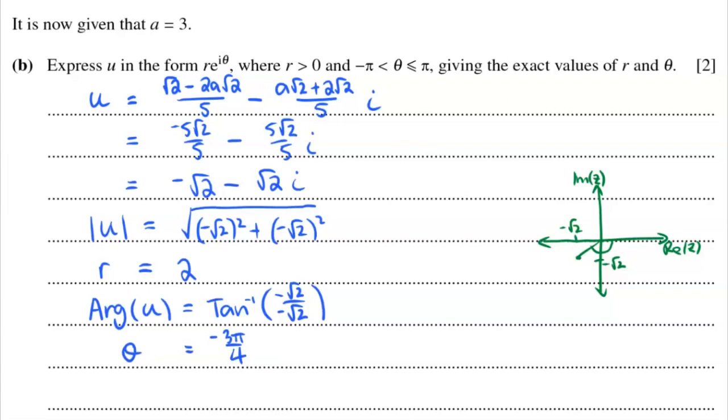Now that we have the two parts, it's a very simple matter of putting u together. u is equal to 2e to the i negative 3 pi over 4. And we are done.